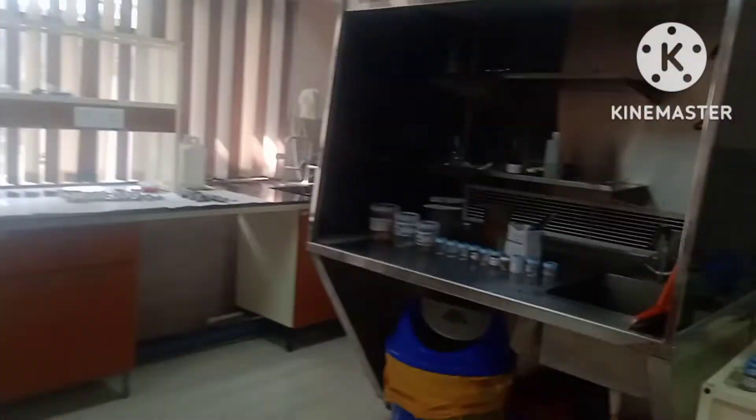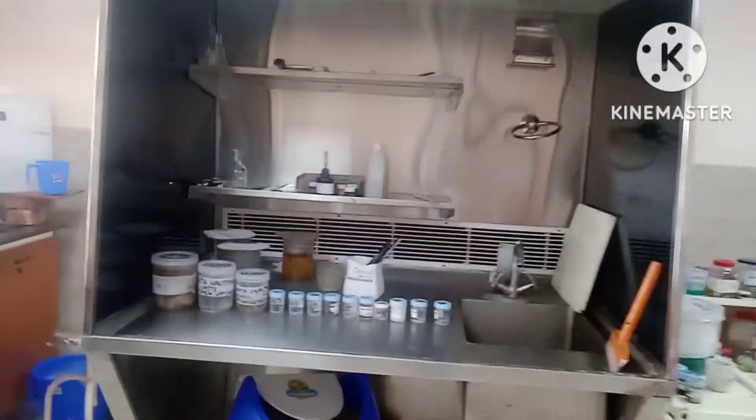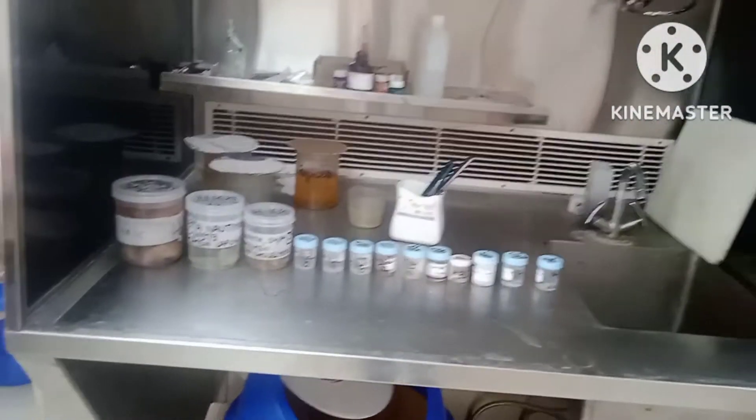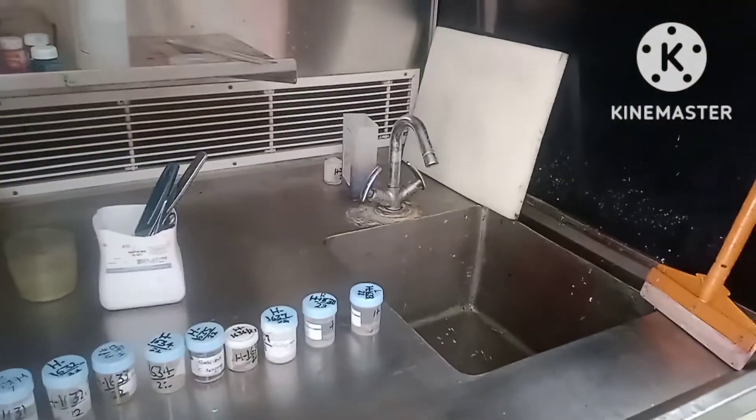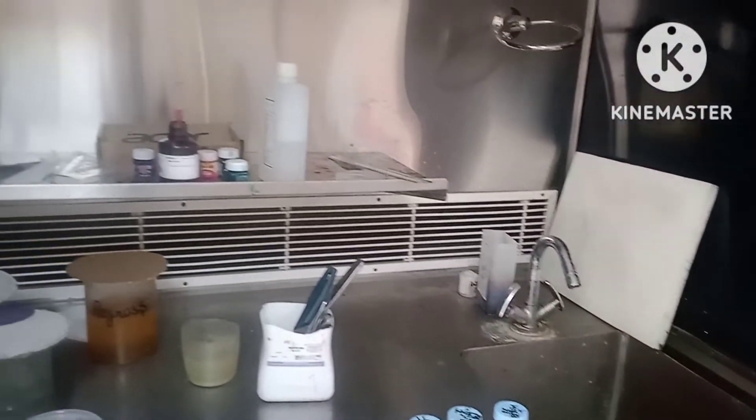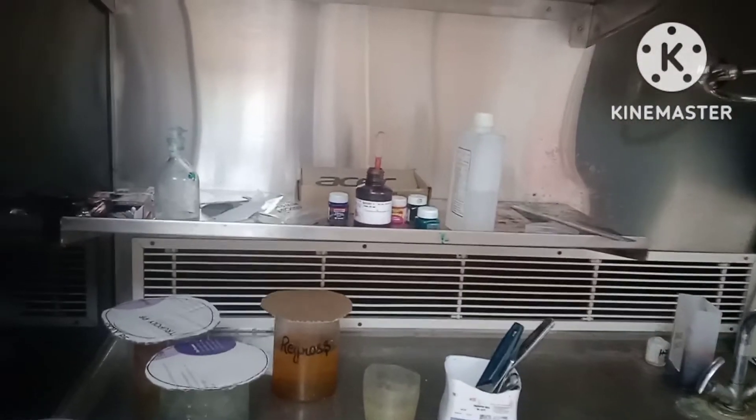For example, uterus or spleen. This is our gross station where we perform all gross examination of specimens. You can see large and small containers. These large containers hold specimens like intestine, gallbladder, and others.